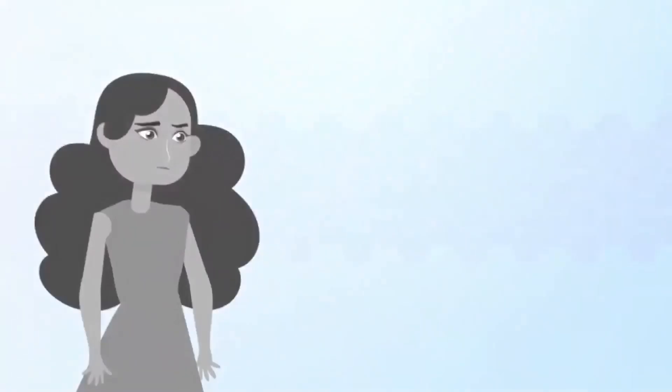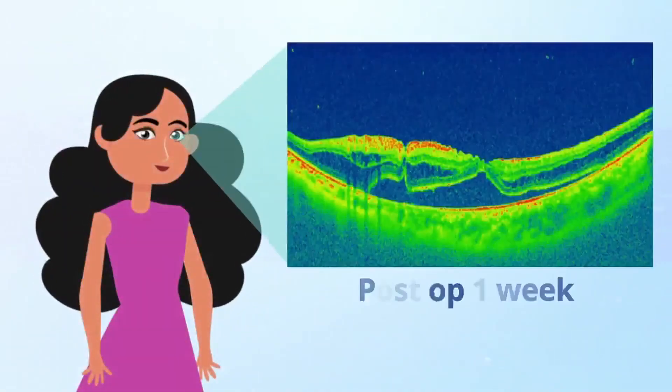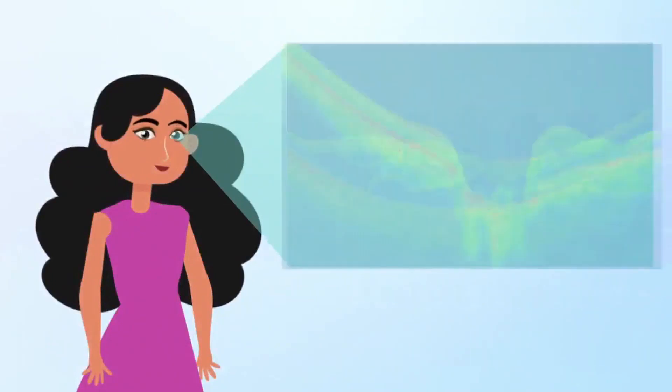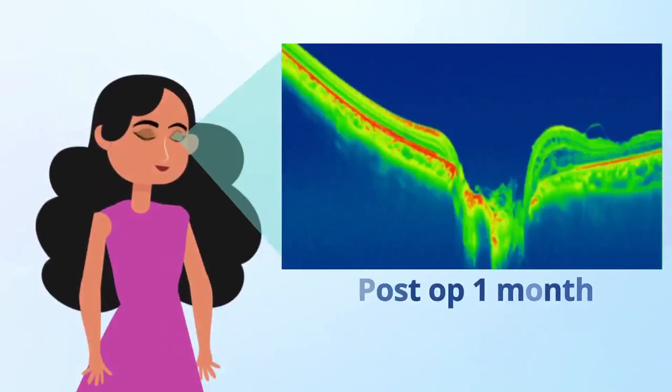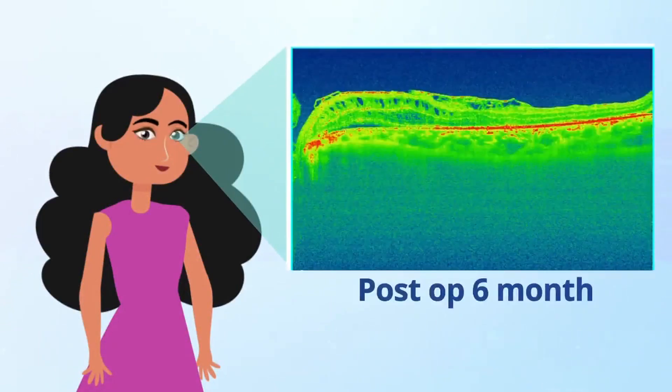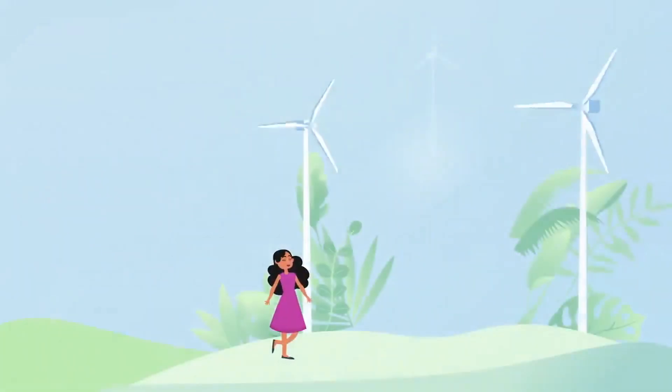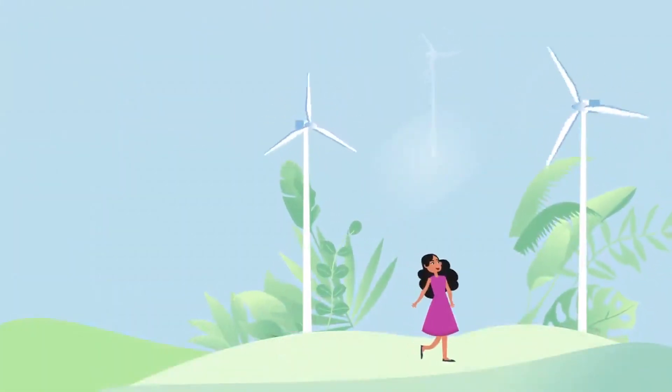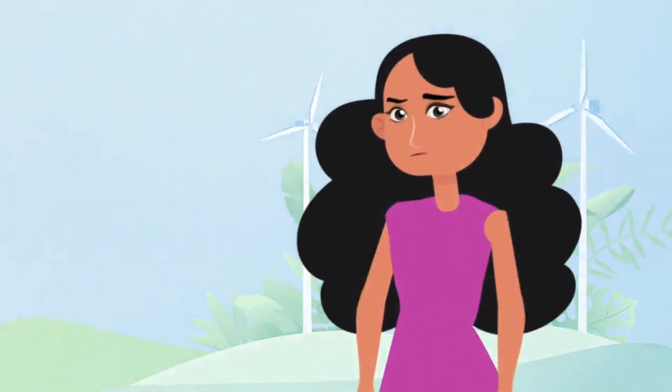The girl was operated with the most preferred modality: internal limiting membrane peeling and tucking, with one flap covering the optic disc pit and the other addressing the maculopathy, along with juxtapapillary laser and SF6 gas tamponade. She recovered well with resolution of the maculopathy and improvement in visual acuity to 6/18. The patient maintained the same vision at six months follow-up with no evidence of recurrence or complications.